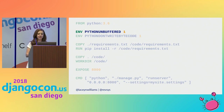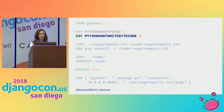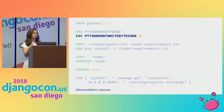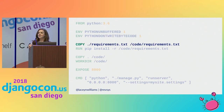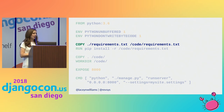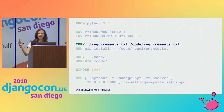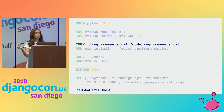PYTHONDONTWRITEBYTECODE keeps Docker from writing .pyc files, which helps keep your Docker image nice and tidy. Your container will have its own directory structure, so you'll have to copy your requirements file from your machine into your container. This line will do that for you, but it puts it in a special directory called code.